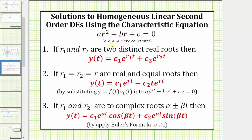Here a, b, and c are the constant coefficients of the differential equation. Based upon the solutions of this quadratic equation, we can determine the general solution, which will fit one of these forms: if we have two distinct real roots, the general solution is in this form; if we have two real equal roots, the general solution is in this form; and finally, if we have two complex roots in the form of alpha plus or minus beta i, then the general solution is in this form.